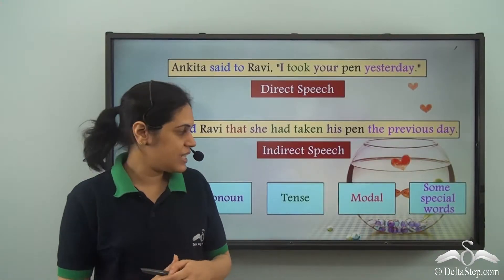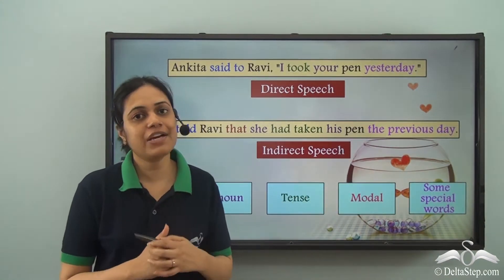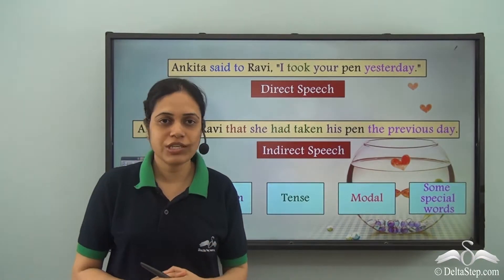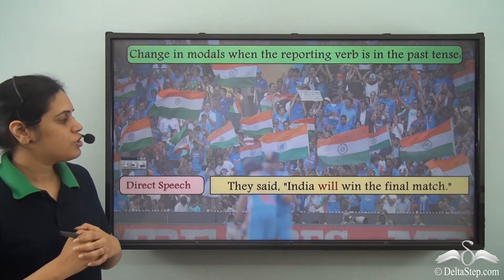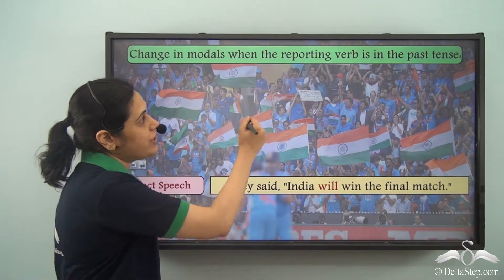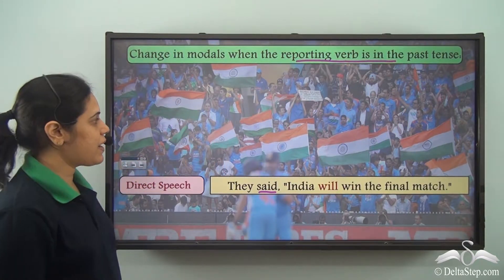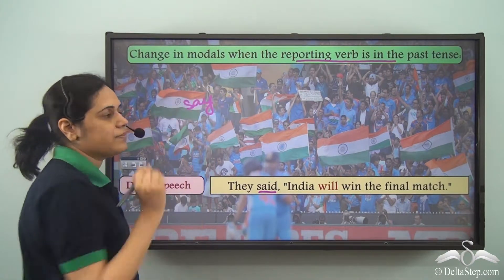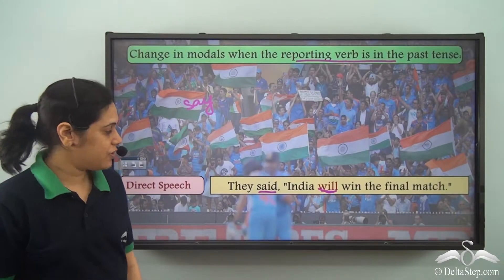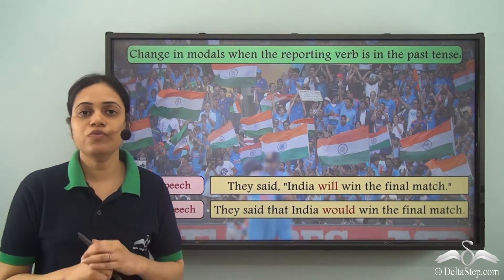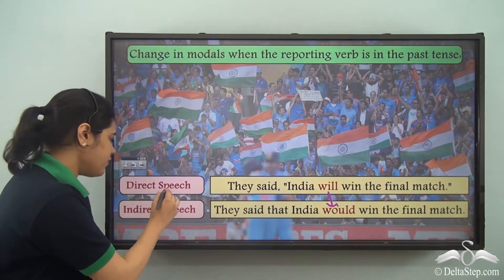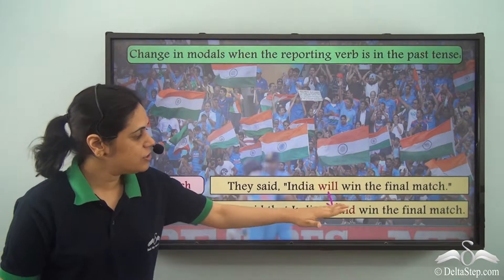In this lecture, we will see how the modal changes when we convert a sentence from direct speech to indirect speech — that is, how the modal within the inverted commas changes in indirect speech. For example: 'They said India will win the final match.' The reporting verb 'said' is in the past tense, and 'will' is the modal. When we convert this to indirect speech, 'will' changes to 'would': 'They said that India would win the match.'